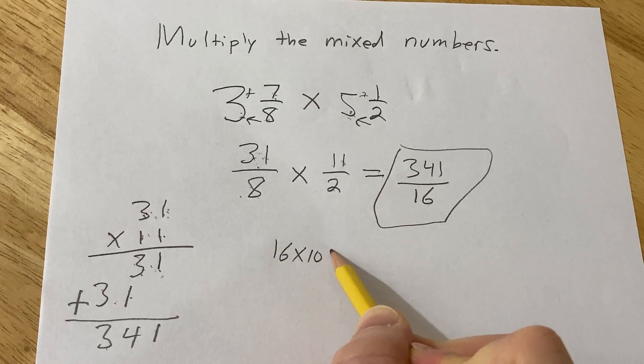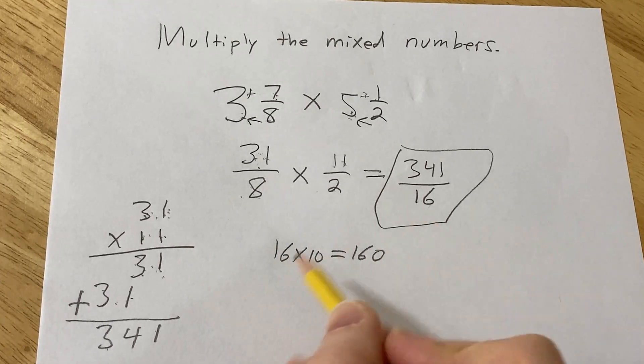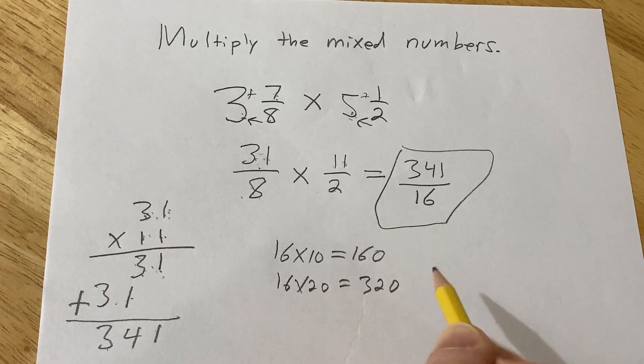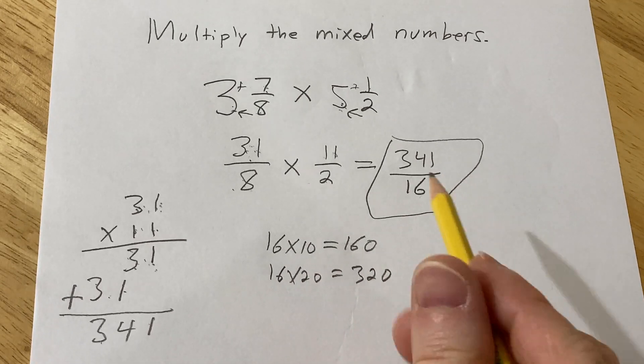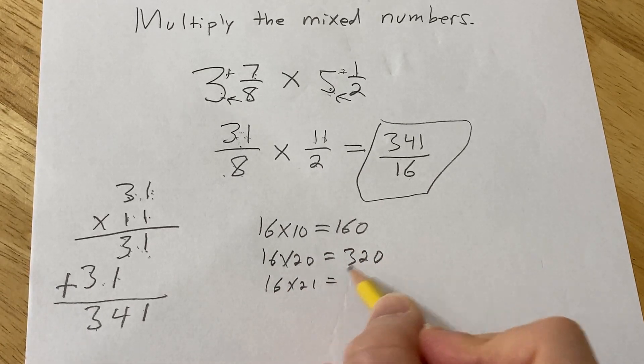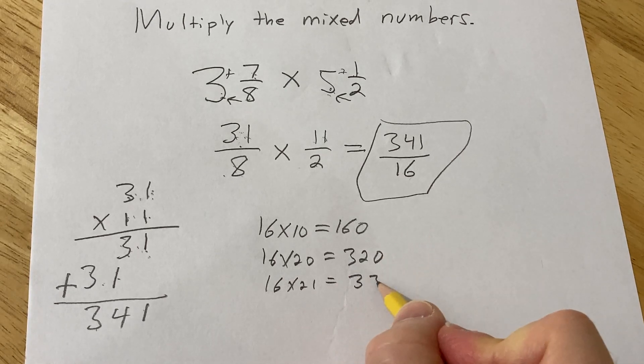We know 16 times 10 is 160. So 16 times 20, that's going to be 320. We're not quite at 341 yet, right? So 16 times 21, well, if we add another 16 to this, that's going to put us at 336.